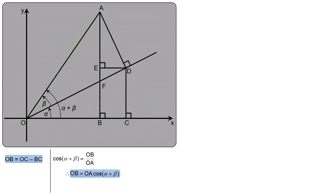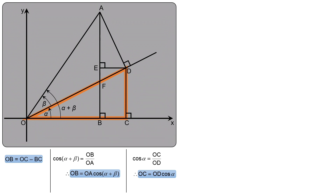Now let's look at triangle ODC. In that triangle we'll focus on angle alpha, specifically the cosine of alpha, since we know that term appears in the cosine addition formula. The cosine is adjacent over hypotenuse, which is OC divided by OD. So cos(α) = OC/OD, and multiplying through by OD gives us OC = OD·cos(α). We'll highlight that relationship because we're about to use it.